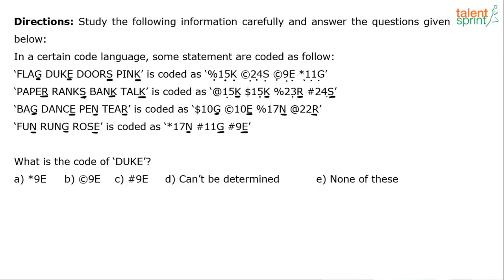Now using this maybe you will be able to answer the questions. For example, what is the code for Duke? The word Duke's last letter is E. So the code should have E in it. Star 9E, copyright 9E, hashtag 9E. All three have got E in it.